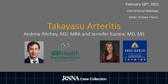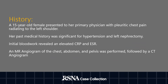This is Andrew Ritchie and today I'll be talking to you about a very interesting case which was eventually diagnosed as Takayasu Arteritis. The patient being presented today is a 15-year-old female who presented to her primary care physician with a chief complaint of pleuritic chest pain which radiated to the left shoulder. The patient's past medical history was significant for refractory hypertension as well as a left nephrectomy. The initial workup began with a routine blood panel which included inflammatory markers, returning with an elevated CRP as well as ESR.